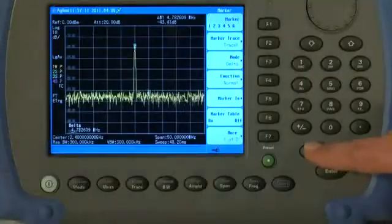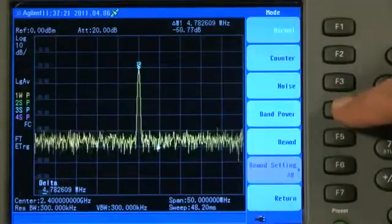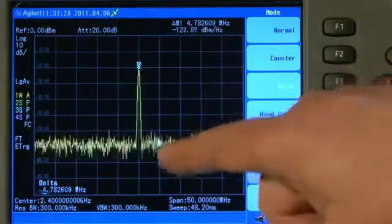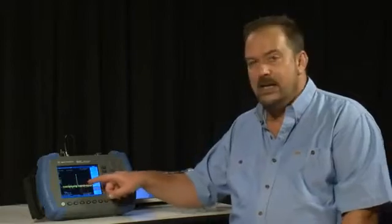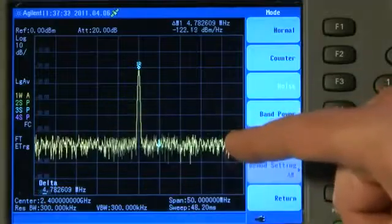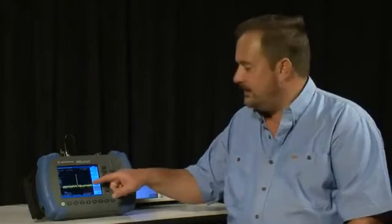Talking of noise floor, if I press the Marker button again and press Marker Function, you will see I can select a Noise Marker. Now you will know that if you are measuring carrier to noise ratio, it is no good just saying that the carrier to noise ratio is 50 dB, because the noise floor can be different according to Boltzmann's Law, depending on which resolution bandwidth setting I have selected. I can set that noise floor to almost any value I want.